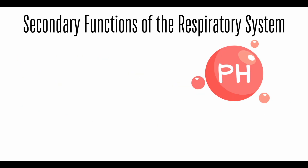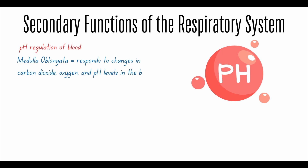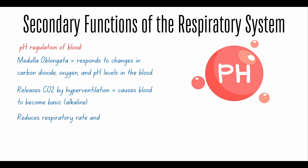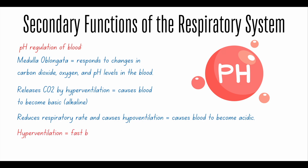Secondary functions of the respiratory system include pH regulation of the blood. This is controlled by the medulla oblongata, which measures the levels of carbon dioxide in blood. The medulla oblongata determines if the body needs to release carbon dioxide by hyperventilating — making the blood more basic — or by reducing the respiratory rate, causing hypoventilation, which makes the pH more acidic. Hyperventilation means fast breathing, while hypoventilation means slower breathing.